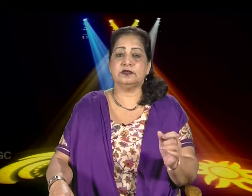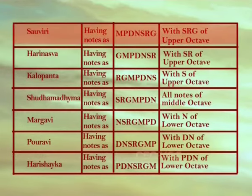Similarly, other seven moochnas were produced from Madhyam gram, which are mentioned in a table with their distinct names. Starting from the note Madhyam ma, the first moochna was Swaviri, having notes ma pa dha ni sa re ga, with sa re ga of the upper octave.